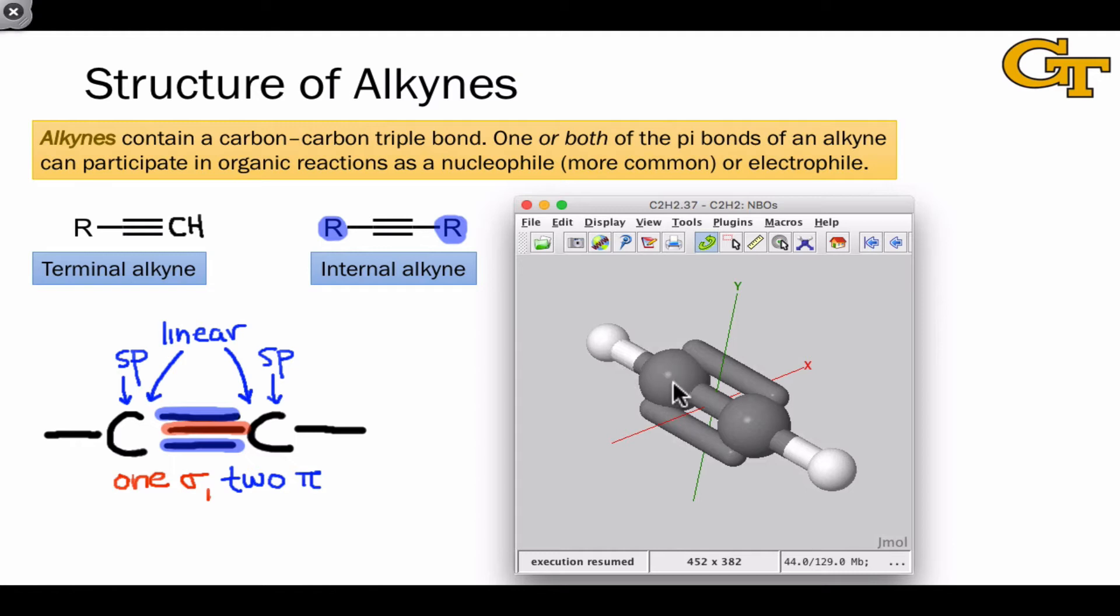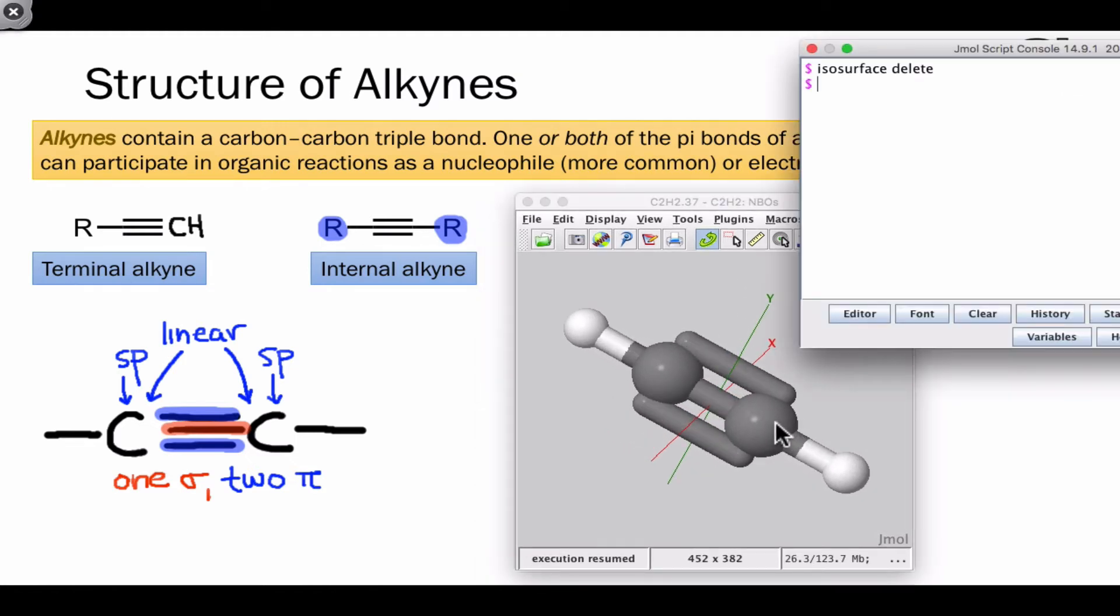The simplest alkyne is C2H2, a compound known as acetylene or ethyne. If we examine the natural bond orbitals of this molecule, we can see the orbitals corresponding to the sigma bond and pi bonds in this structure.